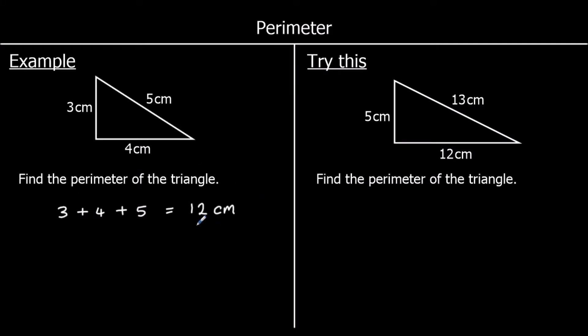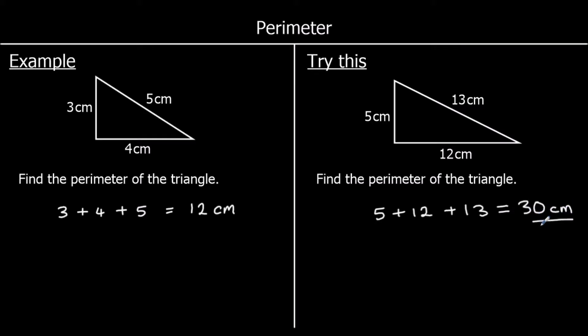Perimeter is a length. We measure it in centimeters, or meters, or millimeters — in this case, centimeters. Now one for you to try, so give this one a go. The perimeter is the distance all the way around the edge of the shape. A triangle has got three sides, so we're going to add up each of the lengths. We've got five plus 12 plus 13. Five plus 12 is 17. 17 plus 13 is 30. So the perimeter is 30 centimeters.